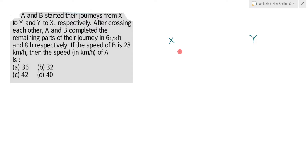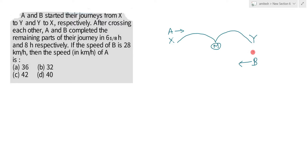In this question, two points are X and Y. A starts from X and B starts from Y. There is a meeting point M. A came from X to meeting point M, and then went to destination Y. B started from Y, came to meeting point M, and then came towards X. This is how the journey is being completed. Speed of B is given as 28 km per hour.